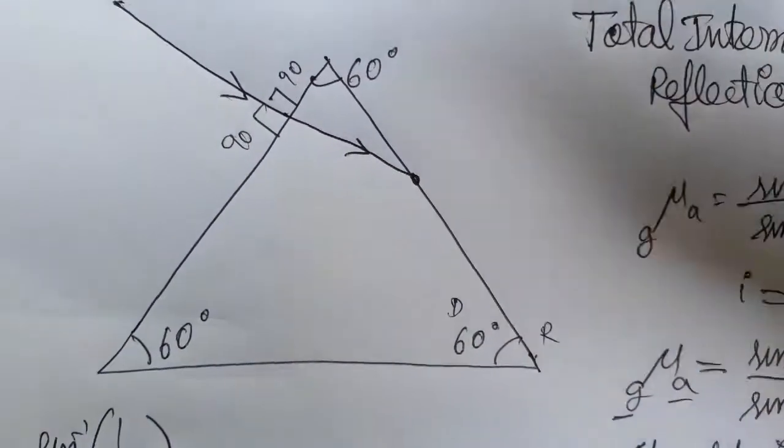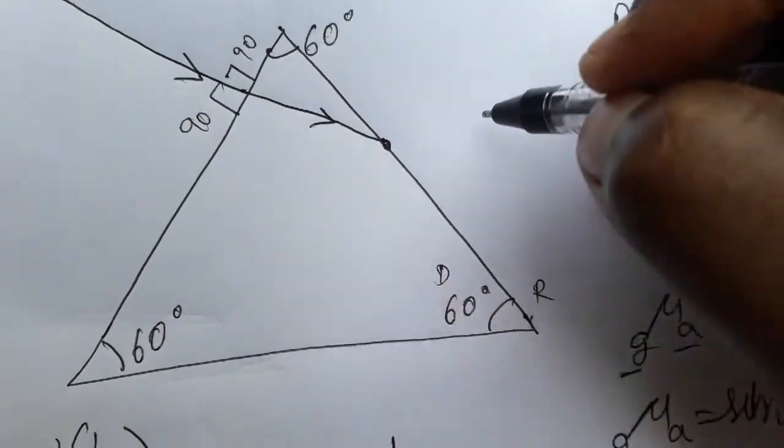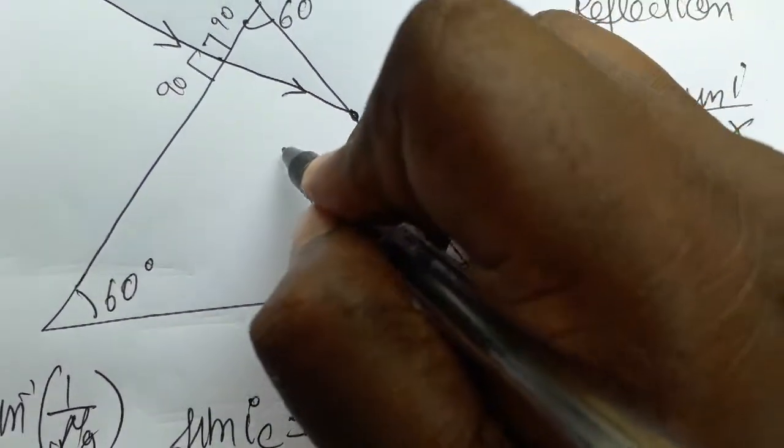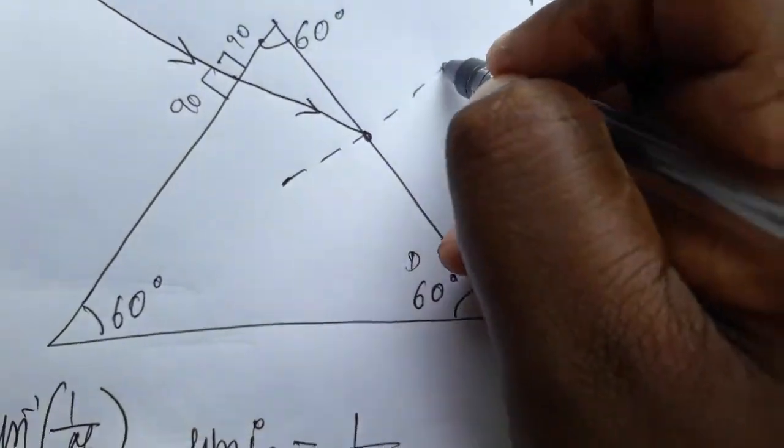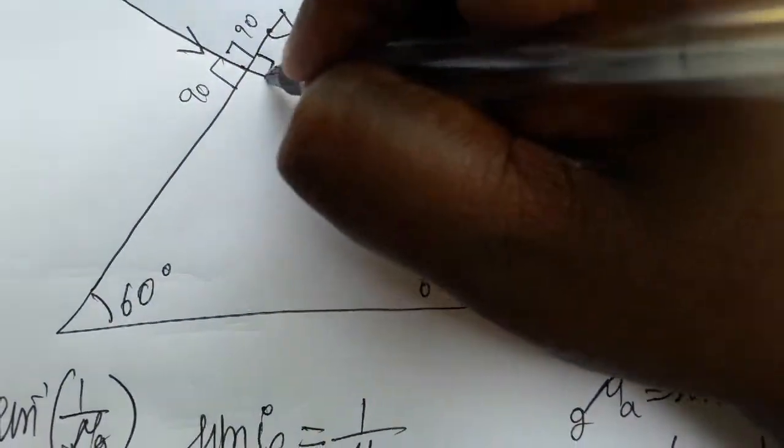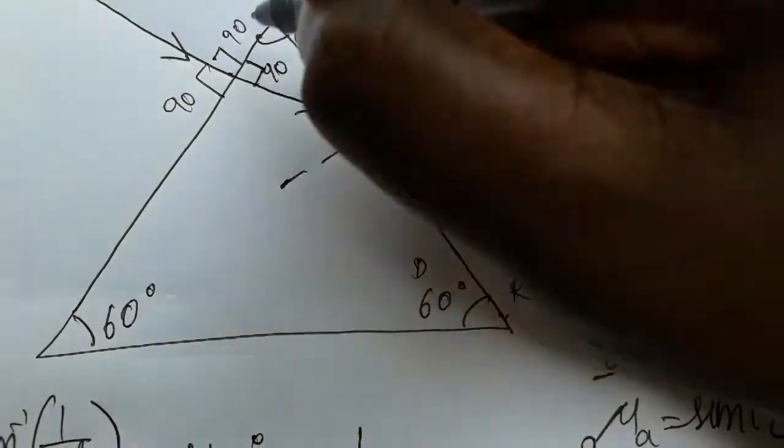Now this is a position you need to know - will it reflect or refract? I am taking the normal from here to here, so this is 90. It is 90 and this is 60.